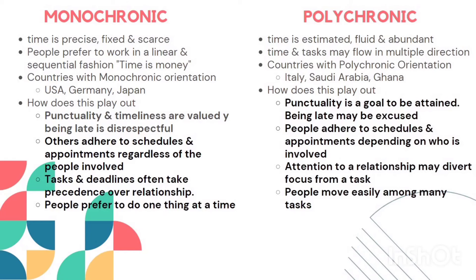In polychronic orientation, time is estimated, fluid, and abundant. Time and tasks may flow in multiple directions — for example, a task estimated for three days may take up to five days. They are not in sync. Countries with a strong polychronic orientation include Saudi Arabia and Ghana.